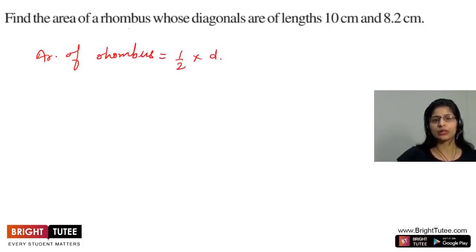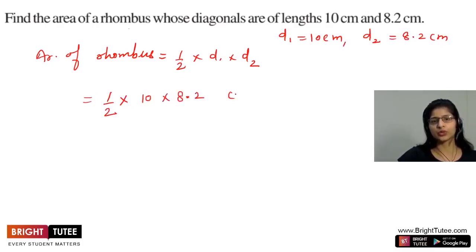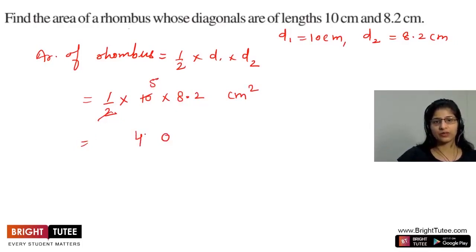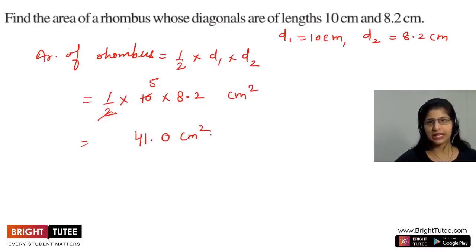Find the area of a rhombus whose diagonals are of length 10 cm and 8.2 cm. Area of rhombus equals half into D1 into D2 = half into 10 into 8.2. That gives us 5 into 8.2 = 41.0 square centimetres.